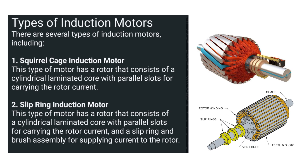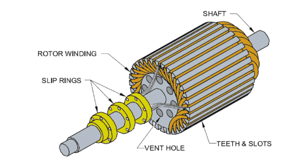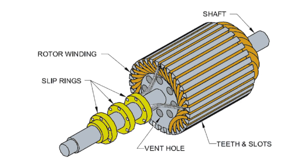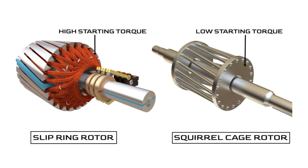The second type is the slip ring induction motor, which is also very important. We use this type of motor where high starting torque is required. These motors consist of a cylindrical laminated core with parallel slots for carrying the rotor current, along with slip rings and brushes for supplying current to the rotor.